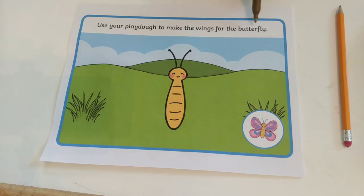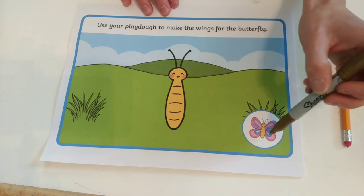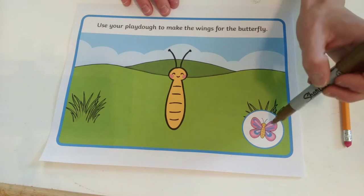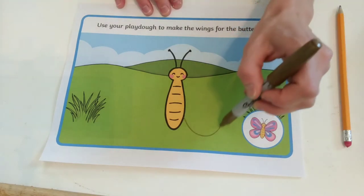This is my butterfly. What is he missing? Yes, it's missing the wings. So I'm going to add the wings — one, two, three, four wings.